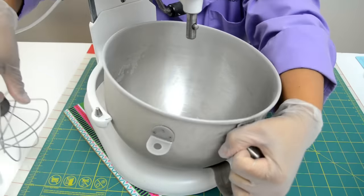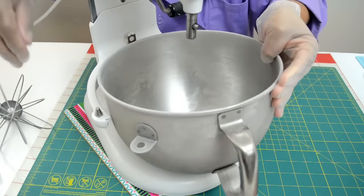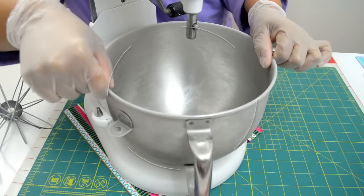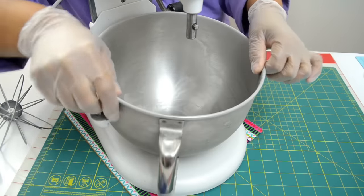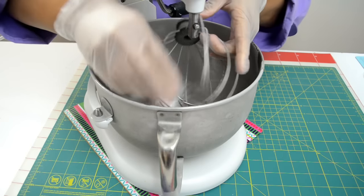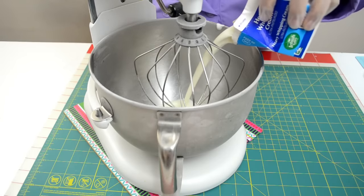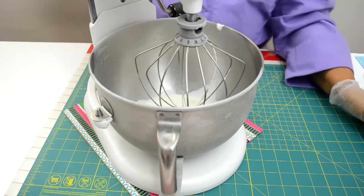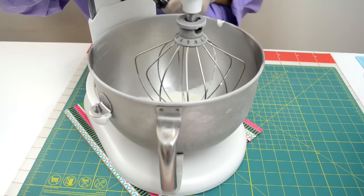While the gelatin cools down, I'm going to whip the cream. As you can see, my mixing bowl and my whisk are frosted because I've kept them in the freezer. I'm going to start whisking the cream at a low speed, then I will increase the speed. Whisk the cream to soft peaks.